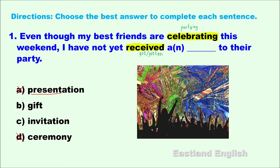The word ceremony in D equals the same thing as a party — it is a close synonym. However, you can't bring or get a party for a party. The next keyword is the preposition to. We can delete choice B because we normally use the word gift with the preposition for. Invitation is the best answer. The whole sentence should be: Even though my best friends are celebrating this weekend, I have not yet received an invitation to their party.